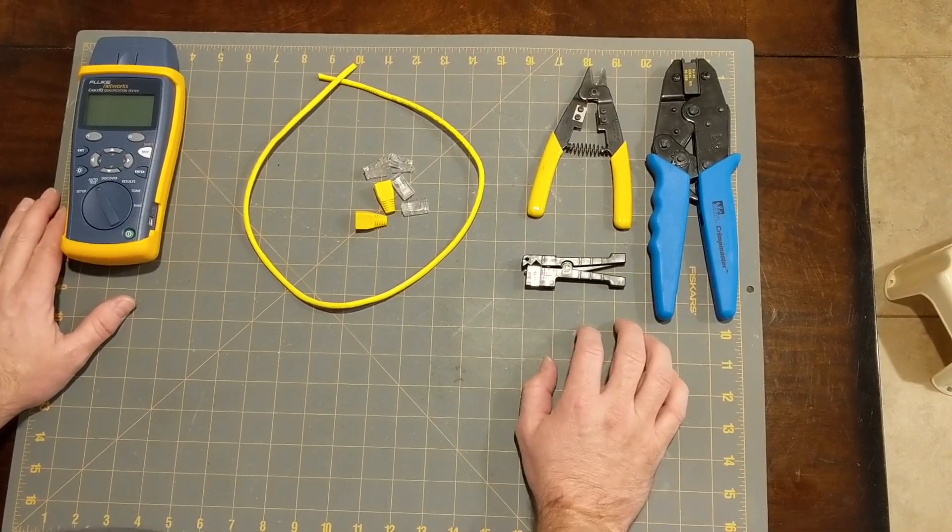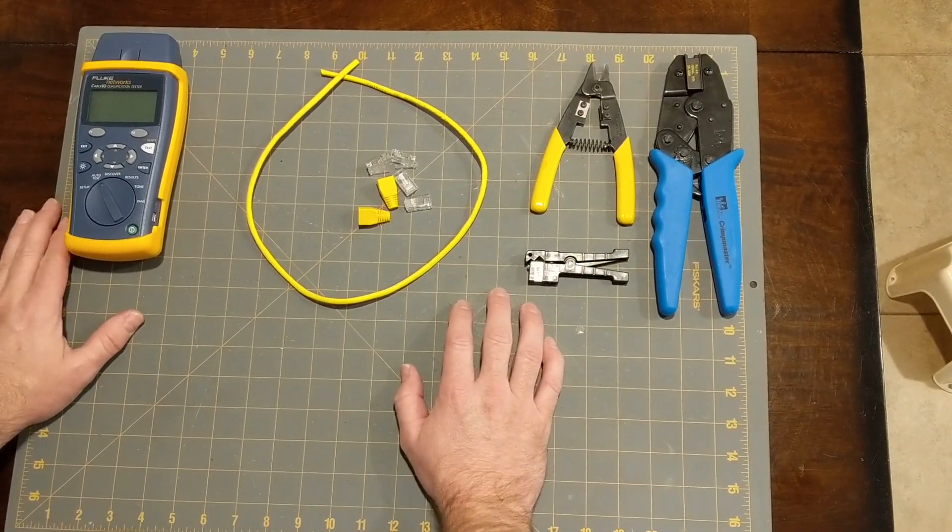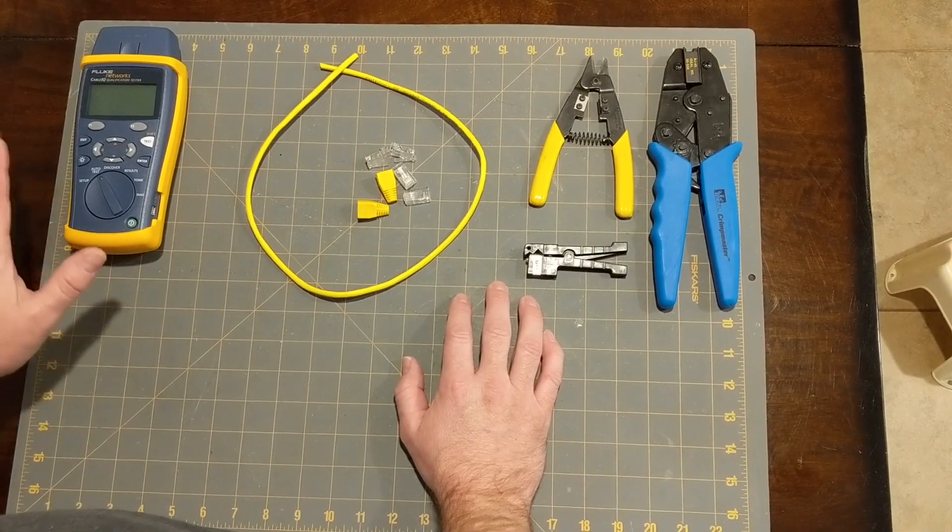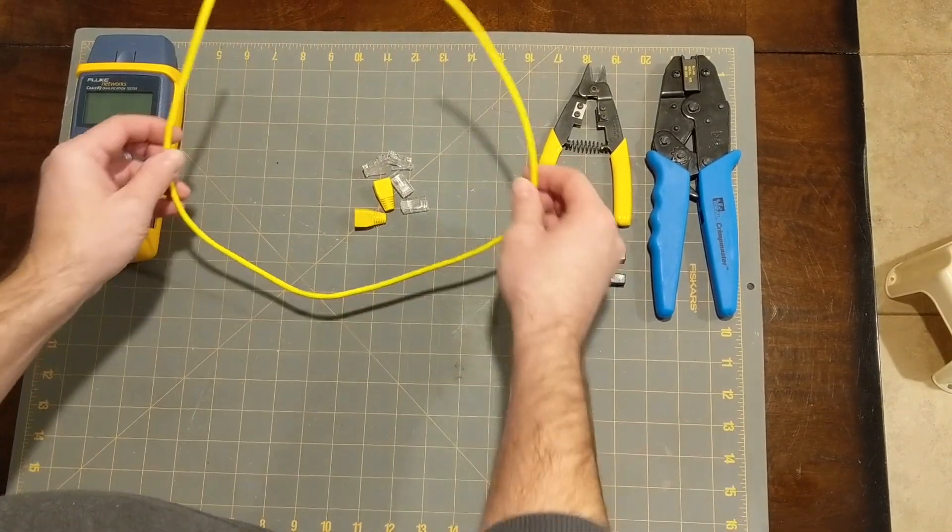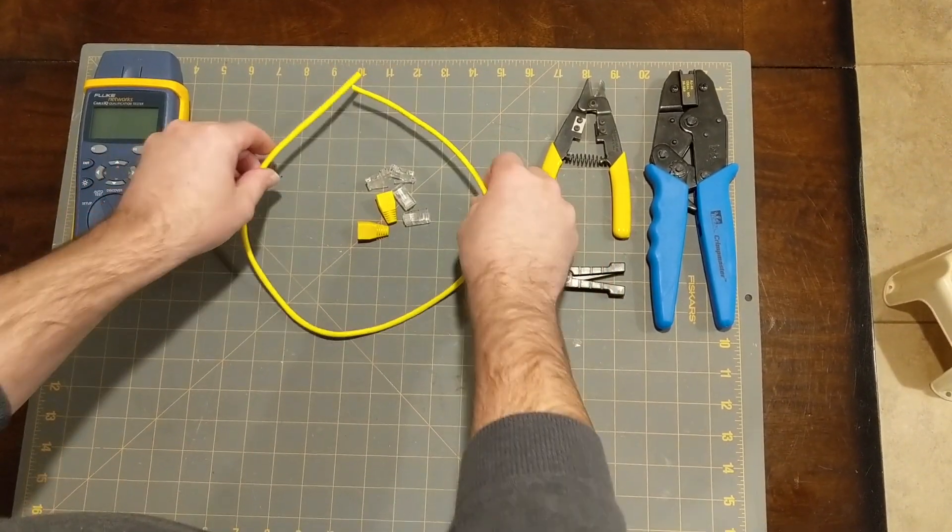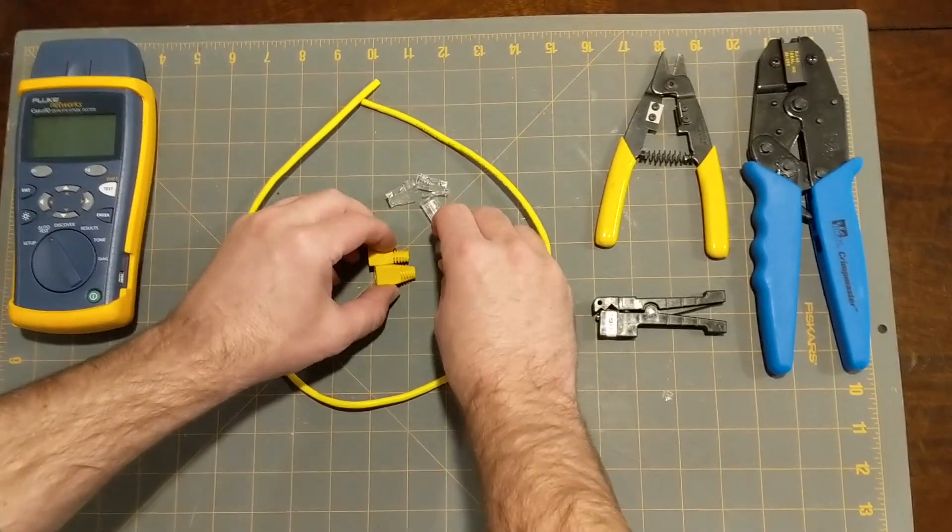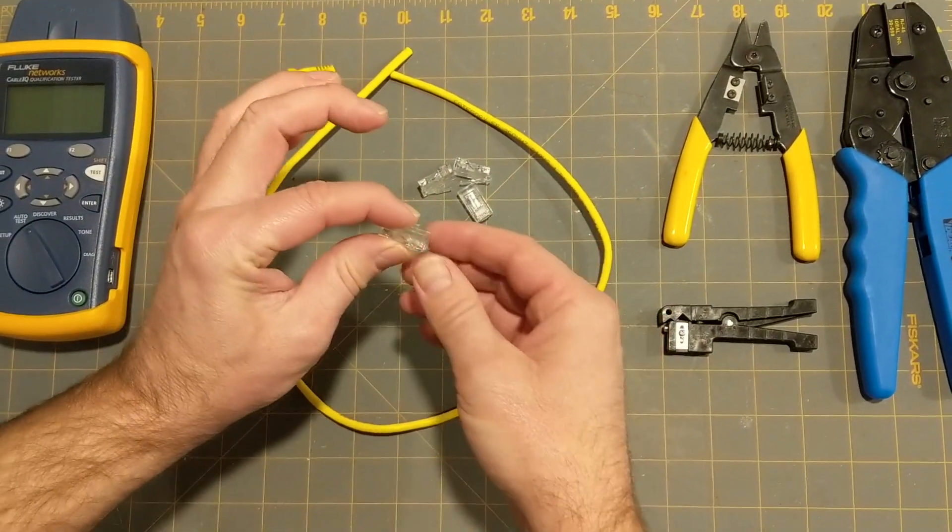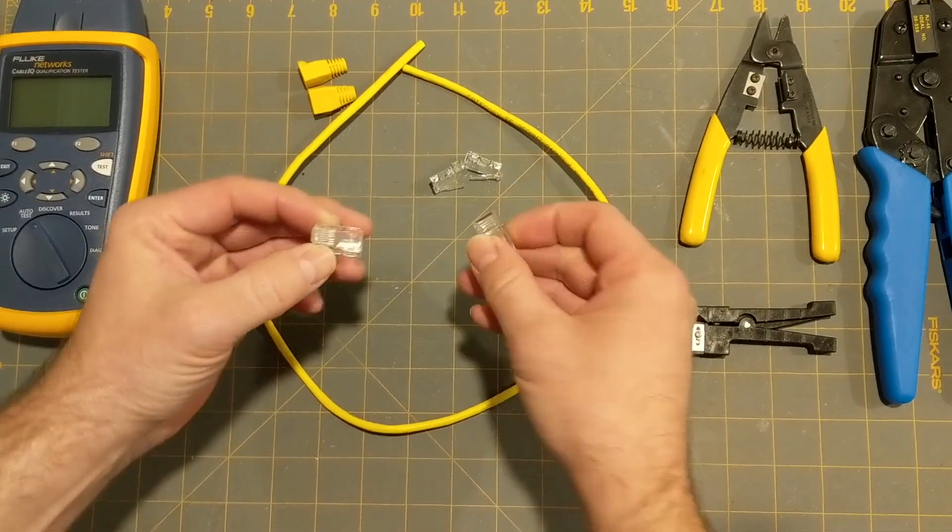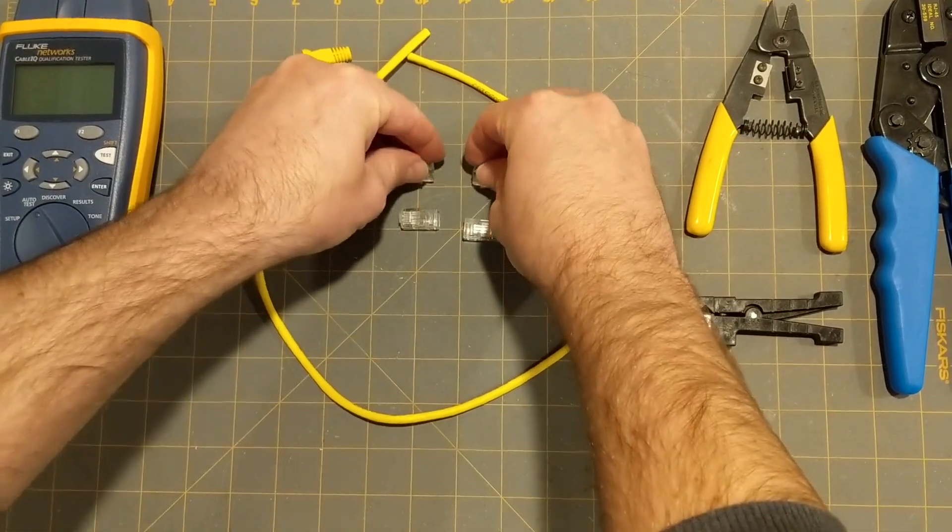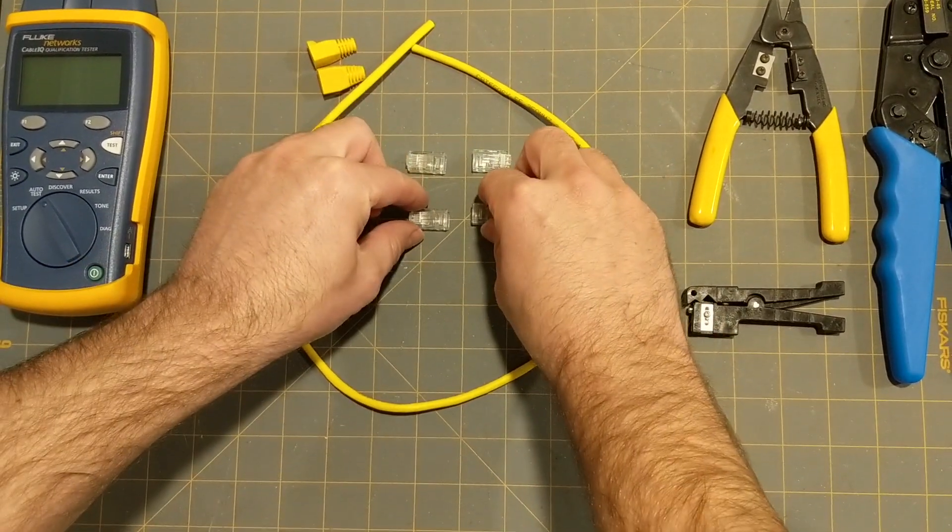We've got a couple of tools lined up here and some materials, and I'm going to go through what each one of them is used for. To begin with, we've got a short piece of Cat5 cable. We've got a couple of boots, which are used to protect the connectors on the end from getting damaged. And we've got a couple of connectors, and I always bring extra because it never works out right the first time.